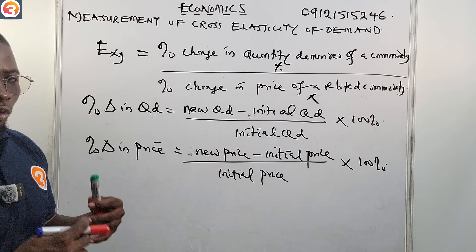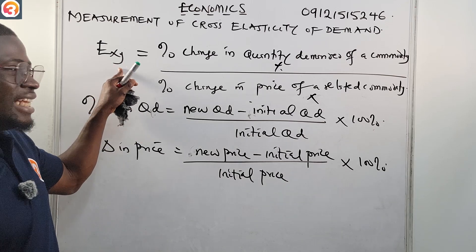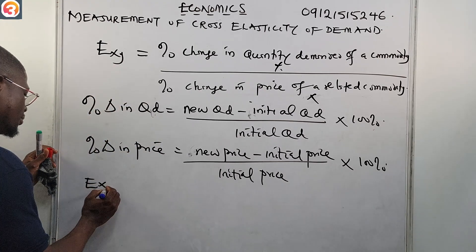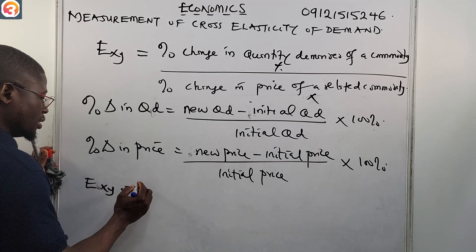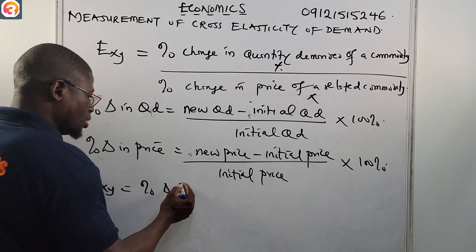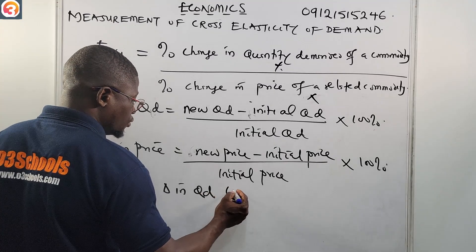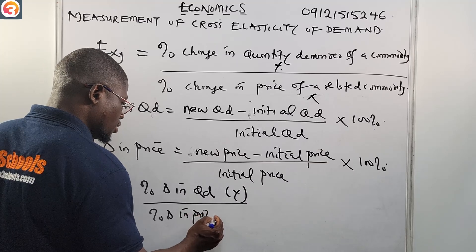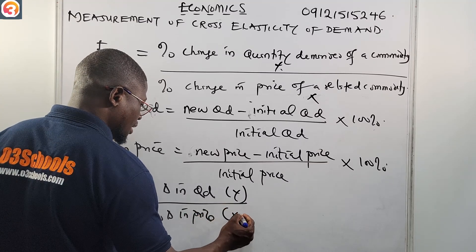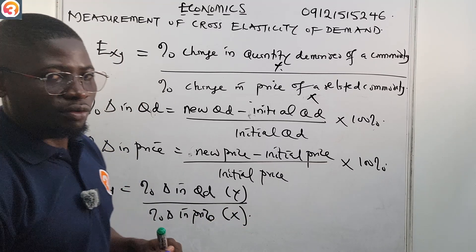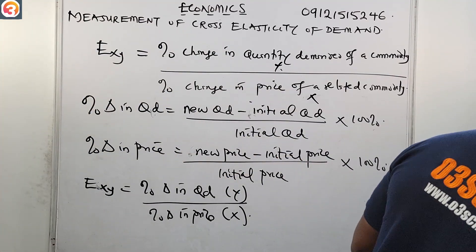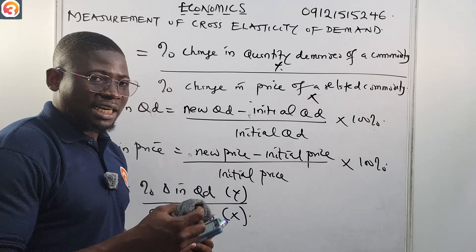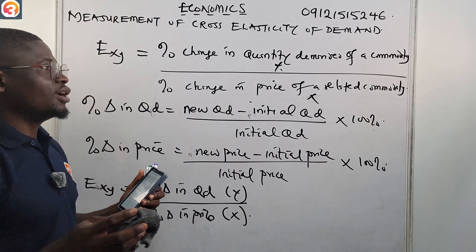So what we do is take a question, identify the values, and find the answer. E(XY) is the percentage change in quantity demanded of good Y, all over percentage change in price of the related commodity X. Let us now take a question from the O3 School JAMB app — a real JAMB past question — to explain the concept. Since we have this formula in mind, there is also a shortcut formula I will show you while solving.